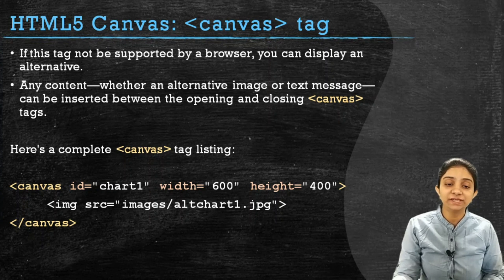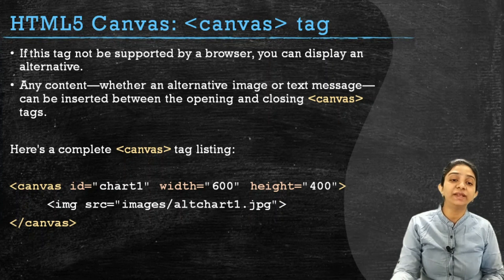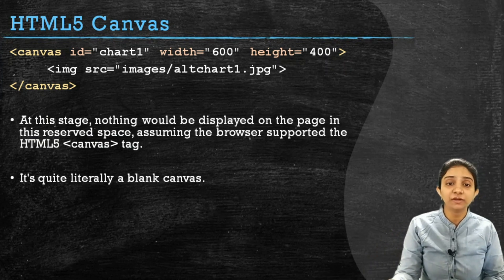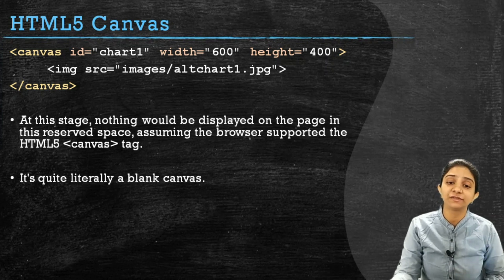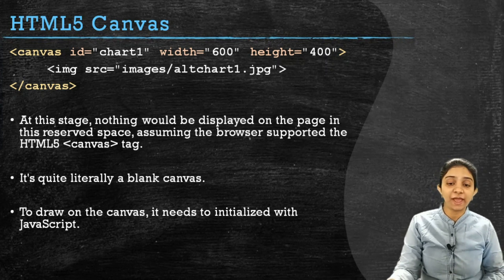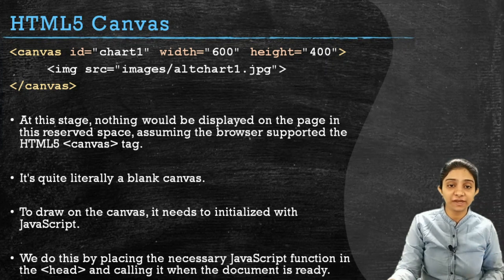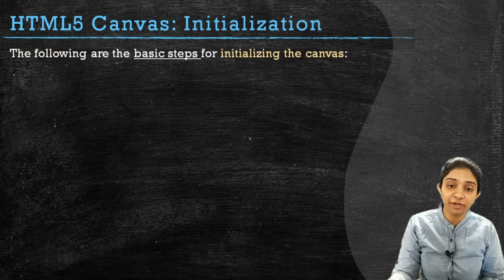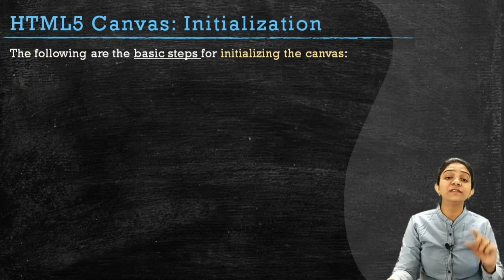Or we can directly write text that will be visible only when canvas is not supported by the browser. If the canvas tag is supported by the browser, nothing will be displayed in the canvas area — it will be a literally blank canvas. To draw something on canvas, you need to initialize a canvas with the help of JavaScript, which will be written in the head section of the HTML document using the script tag.